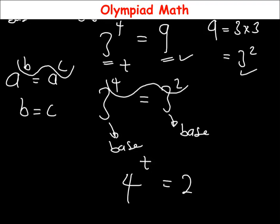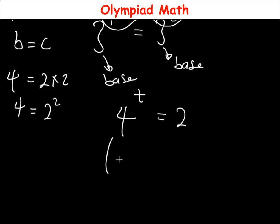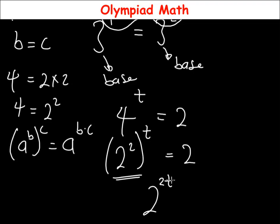Now to solve for t: 4 is a perfect square — 4 = 2 × 2 = 2². So in place of 4 we substitute 2², giving us (2²) raised to power t, equal to 2. Applying the rule that (a^b)^c = a^(b×c), this becomes 2 raised to power 2t, equal to 2.